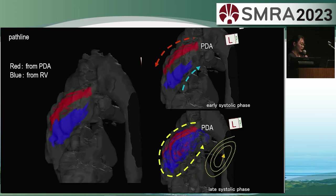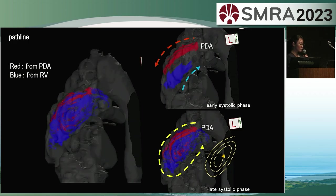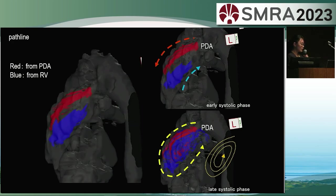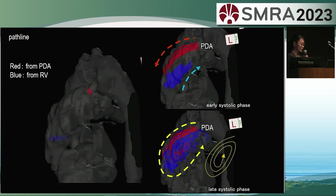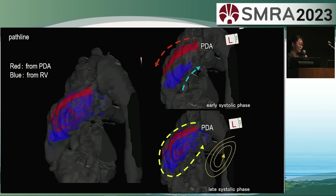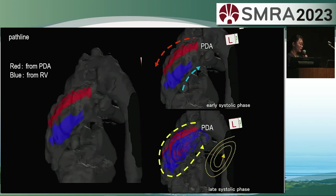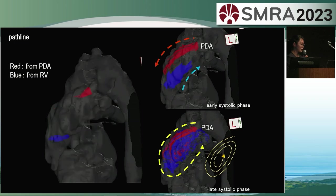Let's check the shunt flow in this case using pathline visualization. The red lines represent inflow from the arterial duct, while the blue lines represent the normal pulmonary artery flow from the right ventricle. You can see that two flows with opposite directions spiral within the pulmonary artery, mixing together. The main pulmonary artery is dilated, and we consider that this may be related to the presence of these flows. In cases of typical pulmonary hypertension, clockwise vortex rotation is said to occur with increasing pulmonary artery pressure. However, in cases of PDA, counterclockwise vortex rotation has been reported, which is consistent with this patient.